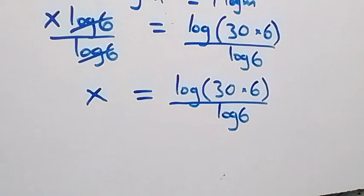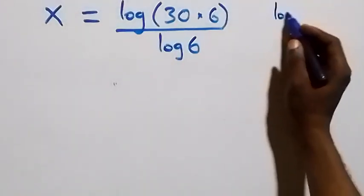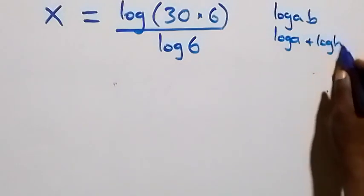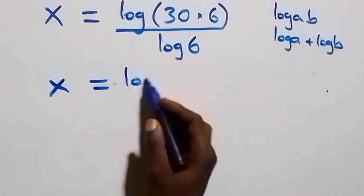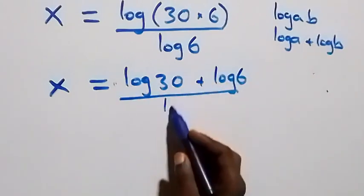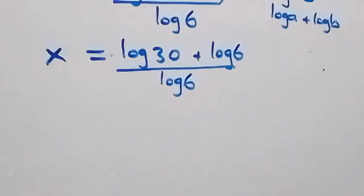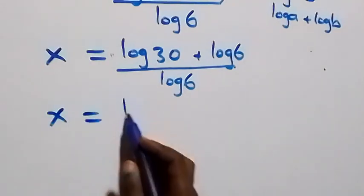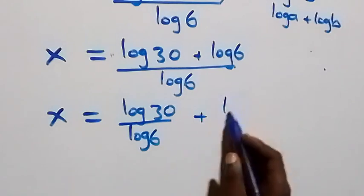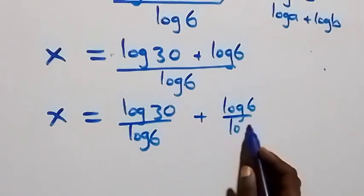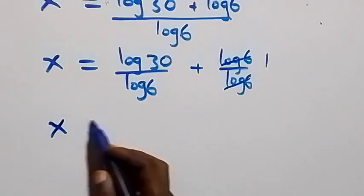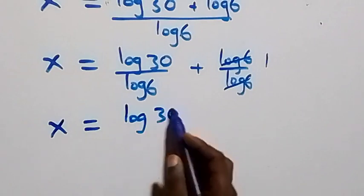From here this follows the law of logarithm: when we have log(a times b), that is the same thing as log a plus log b. So this becomes x equals log 30 plus log 6, all over log 6. We separate this into two fractions: x equals log 30 over log 6, plus log 6 over log 6. Here log 6 cancels with each other and we have 1 left.